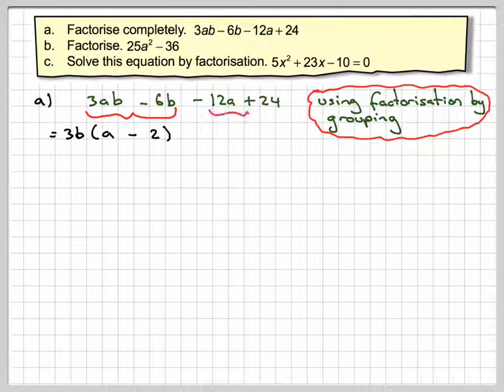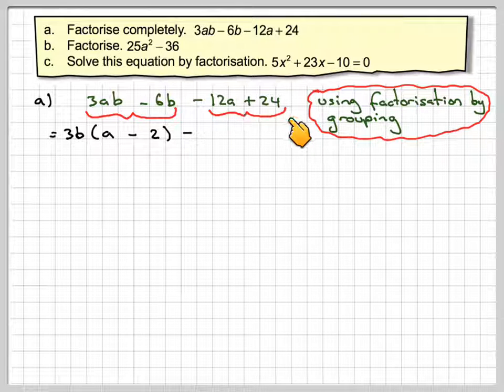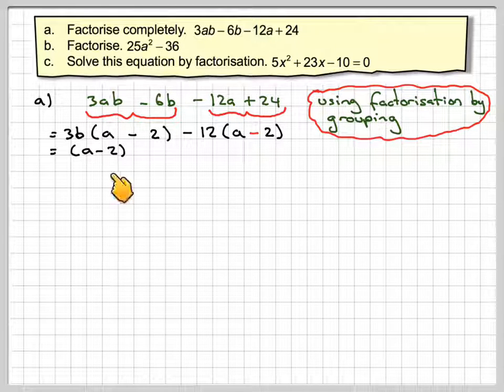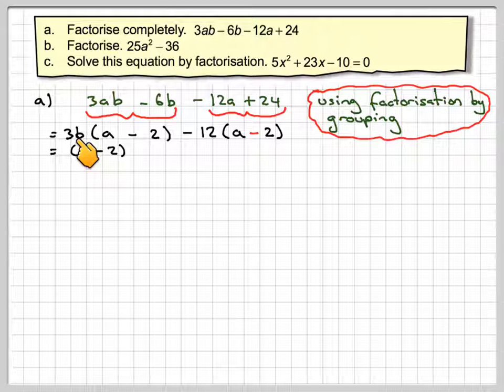Bring down that minus sign and then group these two together. It's a common factor of 12, so minus 12. And when we put brackets in, the sign in between now becomes a minus. Notice here and here we've got the same thing. So that can now come out as a common factor. So we get a minus 2 times bracket 3b minus 12.